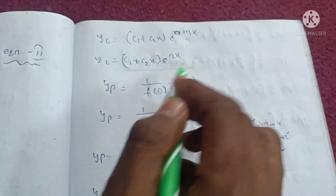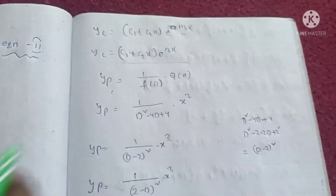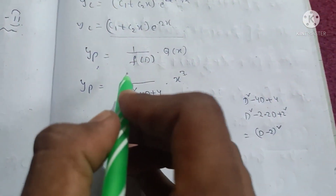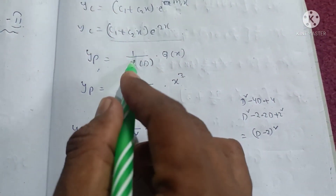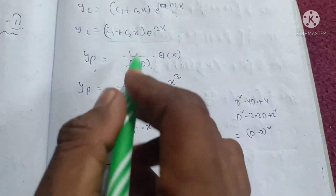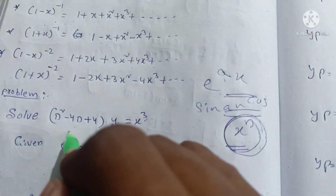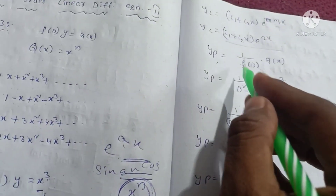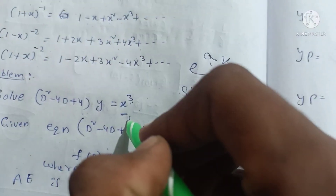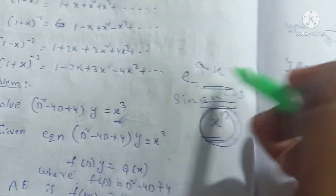For repeated roots, the formula gives: yc = (c1 + c2·x)·e^(m1·x). Here m1 = 2, so yc = (c1 + c2·x)·e^(2x). Now we find the particular solution yp.